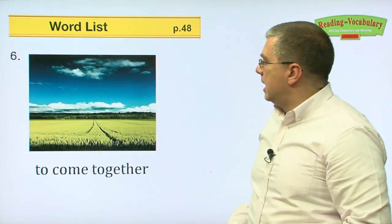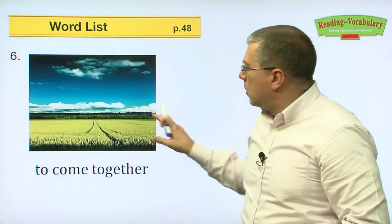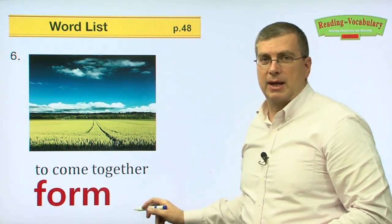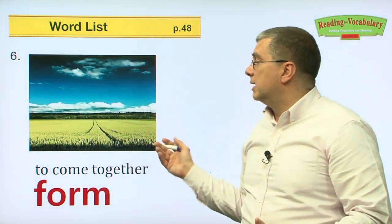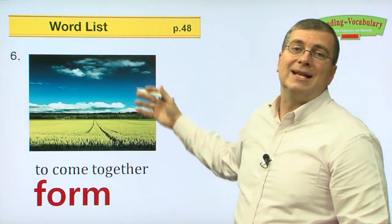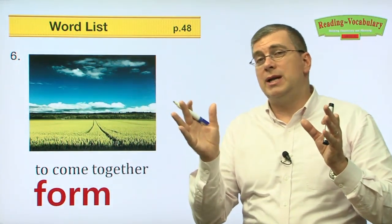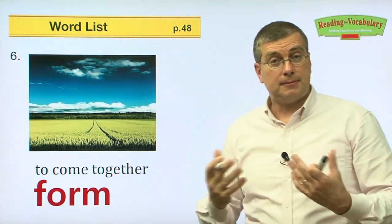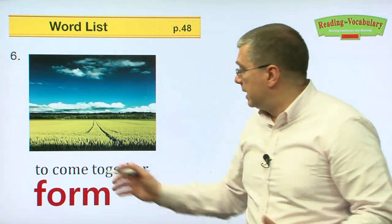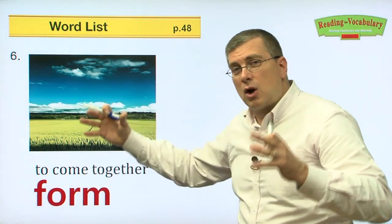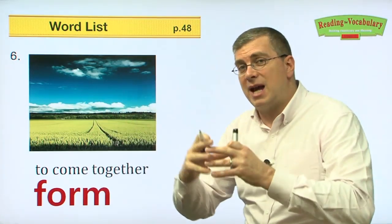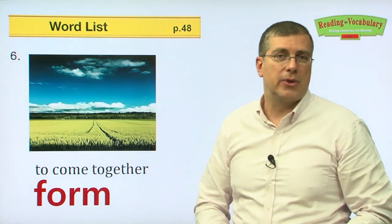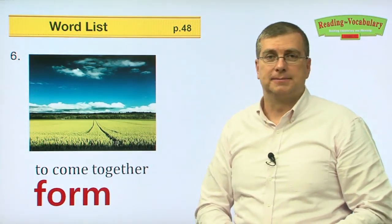Number six. To come together. When things come together, what do they do? They form something. They might form a field or a landscape. When you put wood, concrete, and other materials together, you can form a house or building. When you have many materials come together, they form — make or create — some other thing.